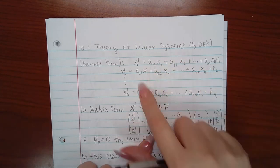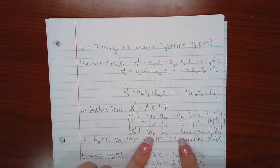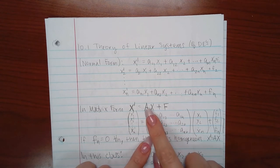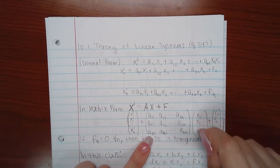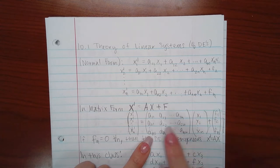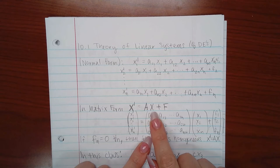Then you can write all the coefficients as its own matrix called the coefficient matrix, and that's denoted as a capital A for the matrix A. And then you can use all of your vectors without the primes as your vector X for your variables. Okay, again, this is a matrix.